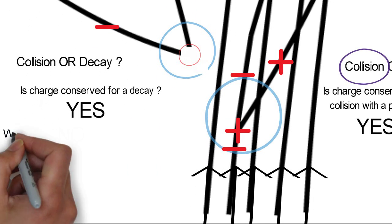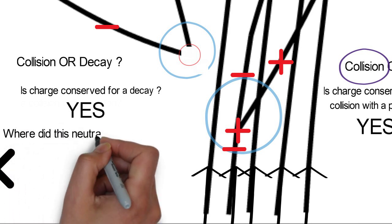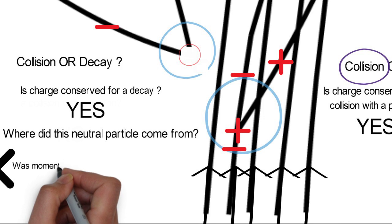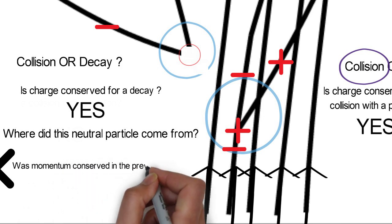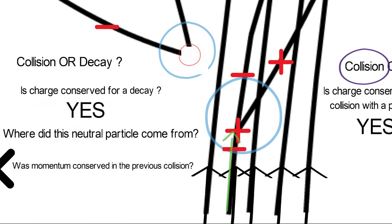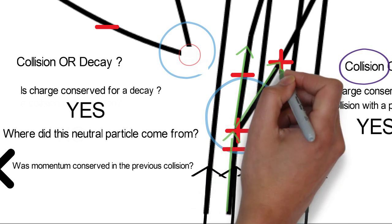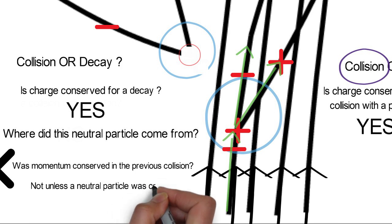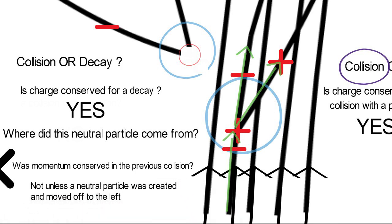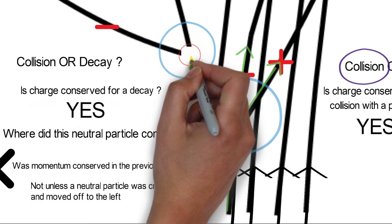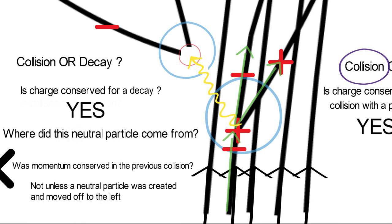But wait — where did this neutral particle come from in the first place? Let's go back to our first example. Was momentum conserved? We have an initial momentum close to vertical, and then two other particles moving slightly to the right — this wouldn't obey momentum conservation. There must have been something else going to the left. Since we cannot detect neutral particles, we say by momentum conservation there must have been something going to the left, whether a neutral particle or even a photon — and this photon decayed right at this point into a positive and a negative particle.